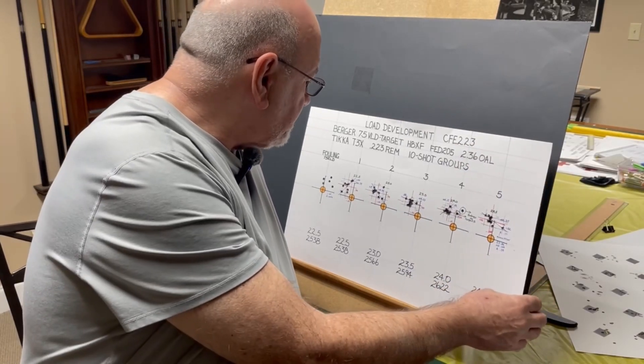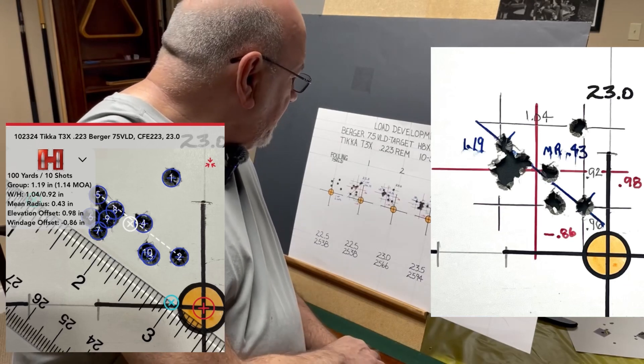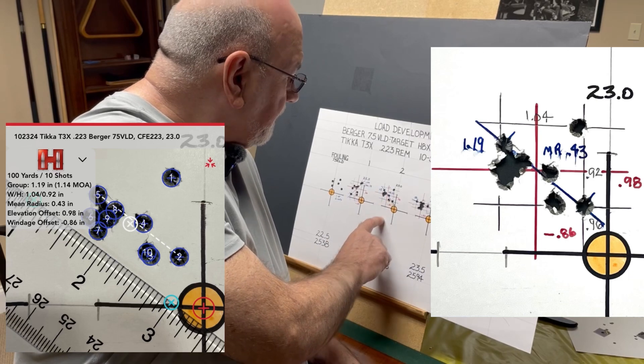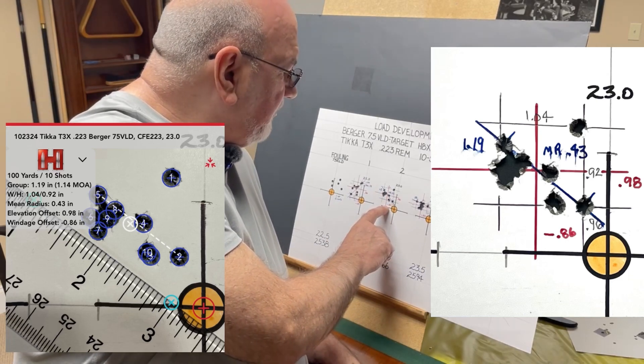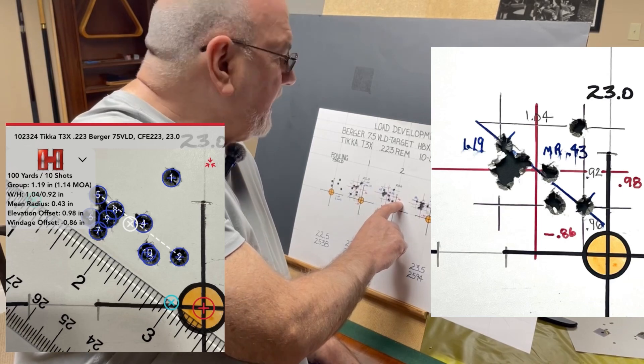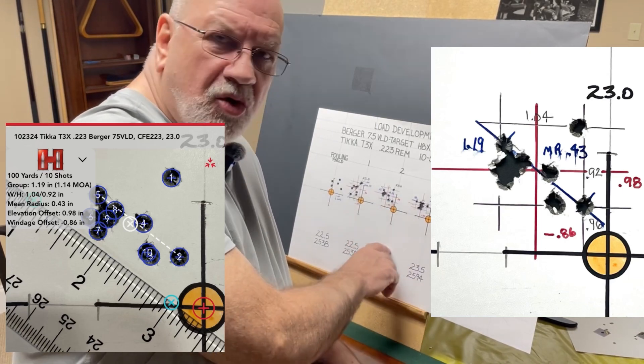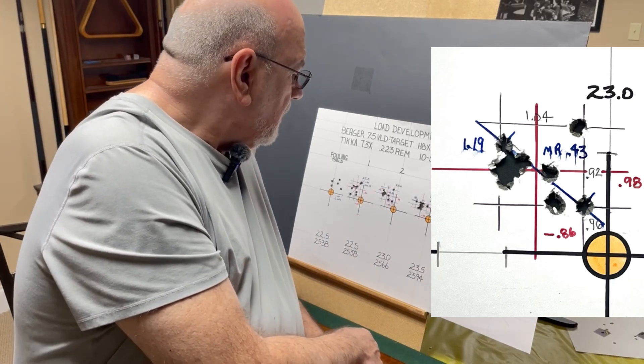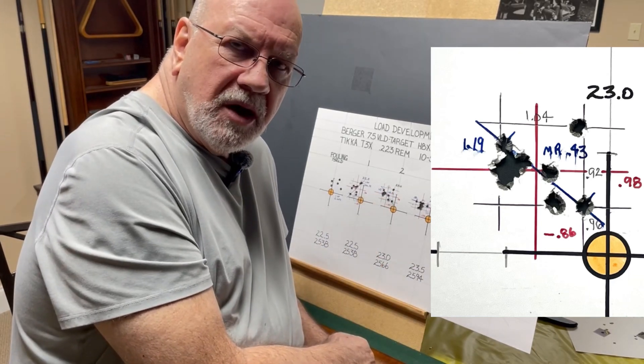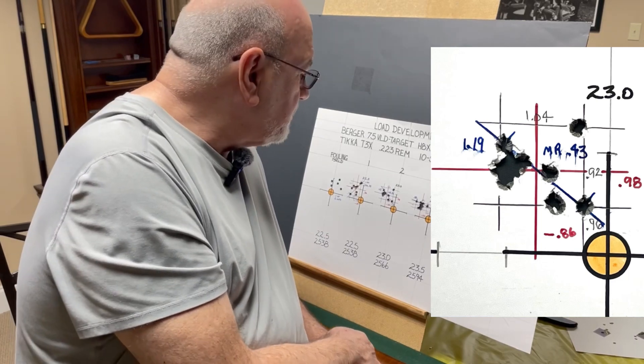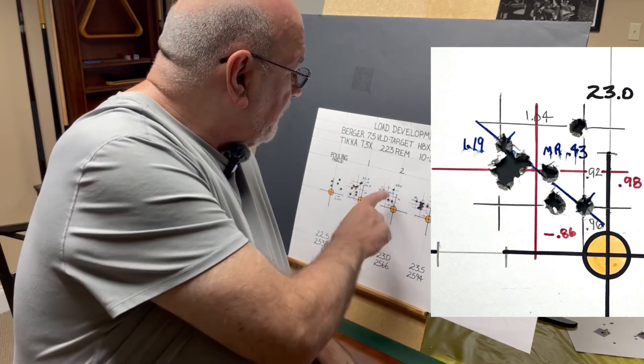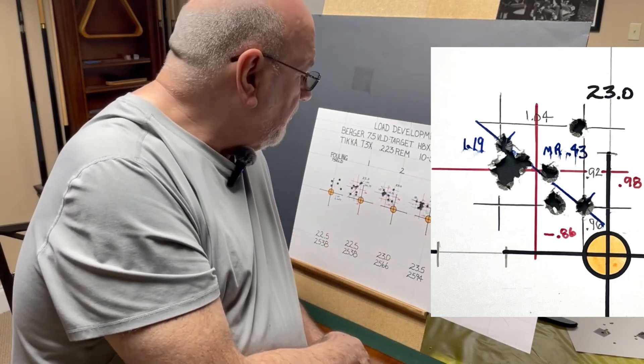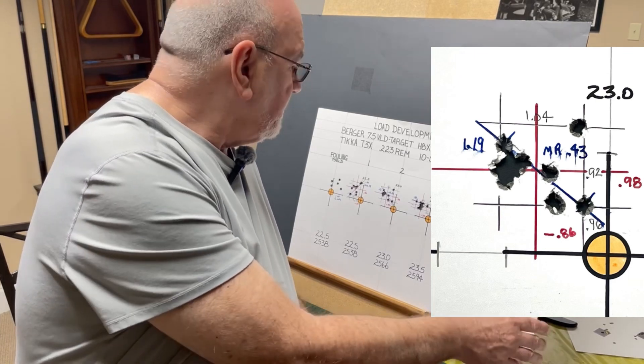Moving on to 23 grains, we're tightening up a little bit. We've got an extreme spread of 1.19 inches. We're shooting 0.86 inches to the left and 0.98 inches high, so we're increasing that charge weight and the bullet shooting just a little bit higher. We have a mean radius of 0.43 which if you double that gives you an average group size of 0.86. We have a width of 1.04 and a height of 0.92, that gives us an area of 0.96, still under an inch.